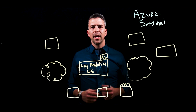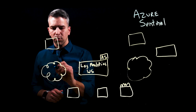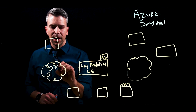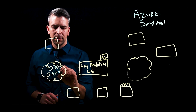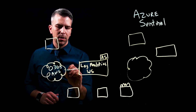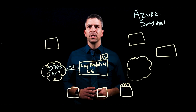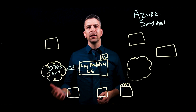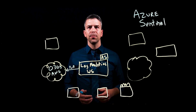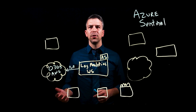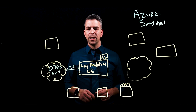First and foremost, how do we get the data from our cloud services? For things like Office 365 and AWS, when you connect those data connectors we create a microservice that will pull this data into your log analytics workspace used by Azure Sentinel. Very easy — one click, you connect that data source and you're able to pull that data in.